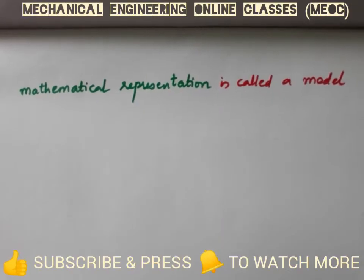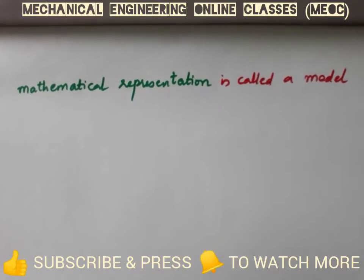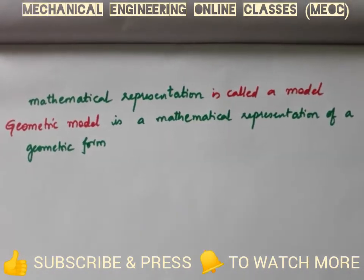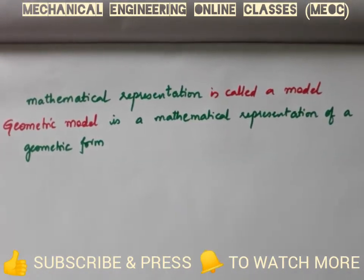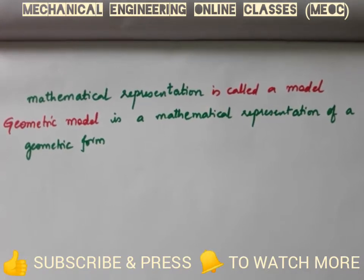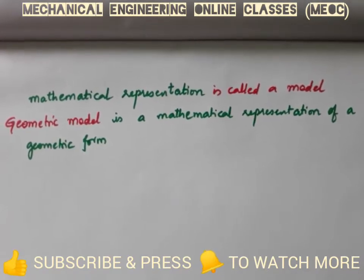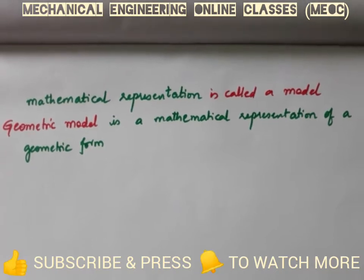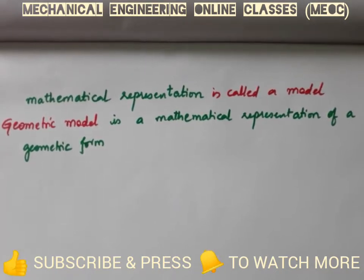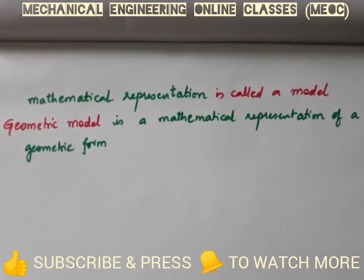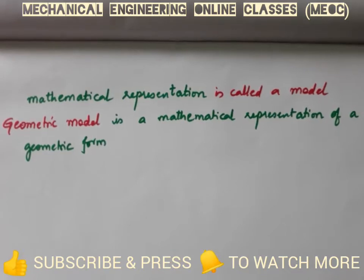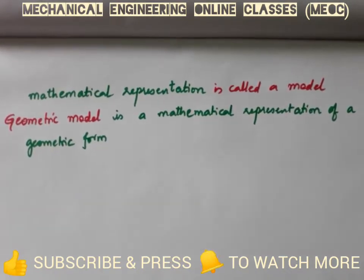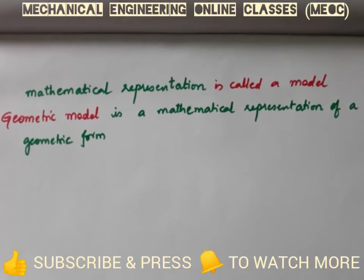A model is nothing but a mathematical representation of something, and if the mathematical representation is of a geometric form of a component, that is called a geometric model. A model is made so that the same model can be used for many purposes and in many applications.